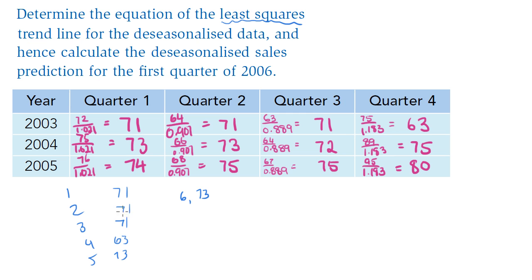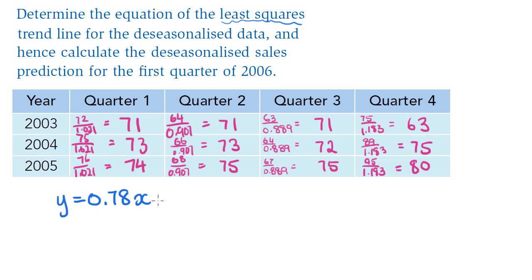Once you've entered that into your calculator and run least squares regression, you get y equals 0.78x plus 67.68. The quarters run from x equals 1 through x equals 12 covering the three years of data (2003–2005), each quarter numbered sequentially: 1, 2, 3, 4, 5, 6, 7, 8, 9, 10, 11, 12. So what is x for the first quarter of 2006?